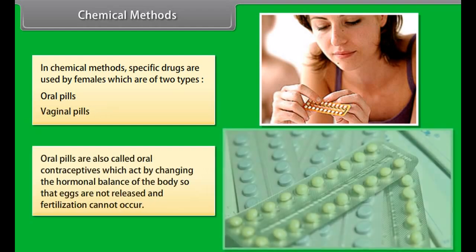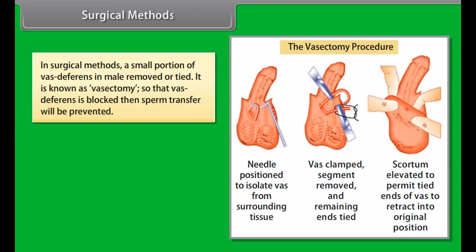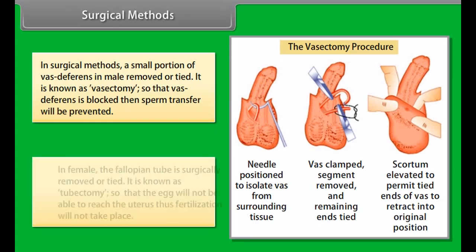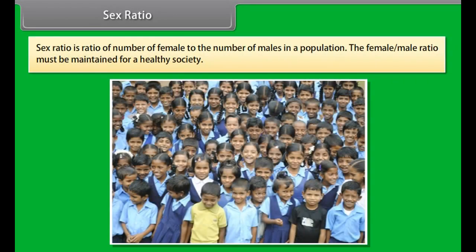In chemical methods, specific drugs are used by females, which are of two types: oral pills and vaginal pills. Oral pills are also called oral contraceptives, which act by changing the hormonal balance of the body so that eggs are not released and fertilization cannot occur.